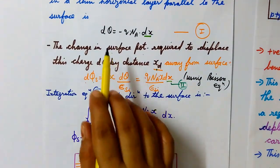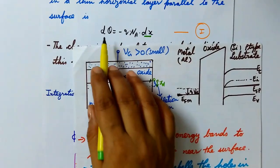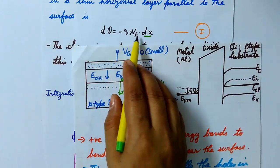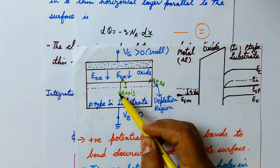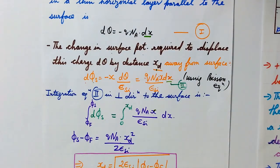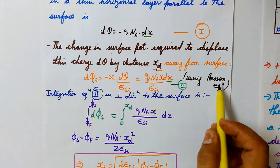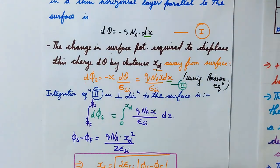Now, if we want this charge dQ — which is minus q·NA·dx — to be displaced by distance xd away from the surface, we require a change in the surface potential, because only then this charge can be displaced from this region. For that we need the Poisson equation to calculate the change in surface potential required to displace this charge dQ by distance xd.